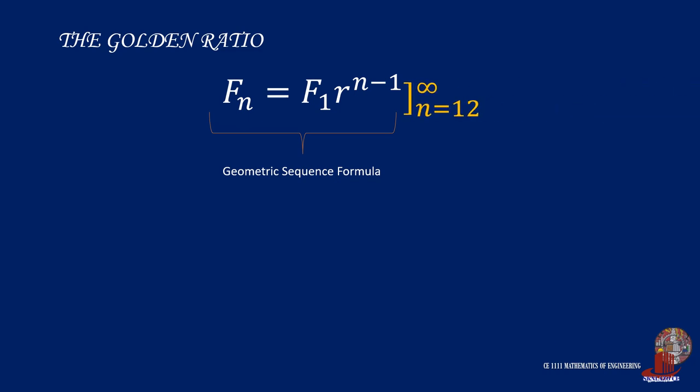The formula has a lower limit of 12 and infinity as the upper limit. Let's validate the formula with an example we solved from the earlier discussion. Say we are looking for the 20th term of the Fibonacci sequence. Instead of iterating, we can solve for F sub 20 with F sub 12 multiplied by the common ratio, which is the golden ratio, raised to n minus 12.